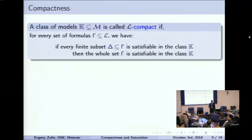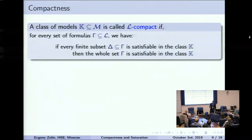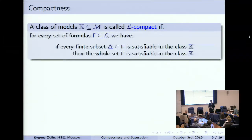And here is where the compactness property comes in. We call a class of models L-compact — or simply compact — if, roughly speaking, the compactness theorem holds for this class. Namely, for every set of formulas gamma, if every finite subset is satisfiable in K, then the whole set gamma is satisfiable in K. Satisfiable means there is a single model where all formulas from the set are true.